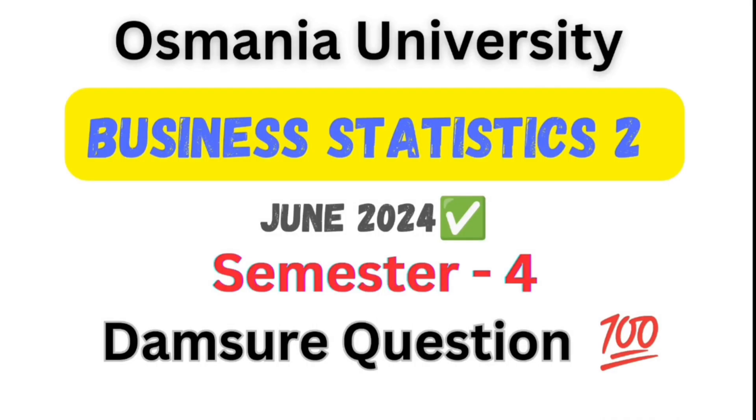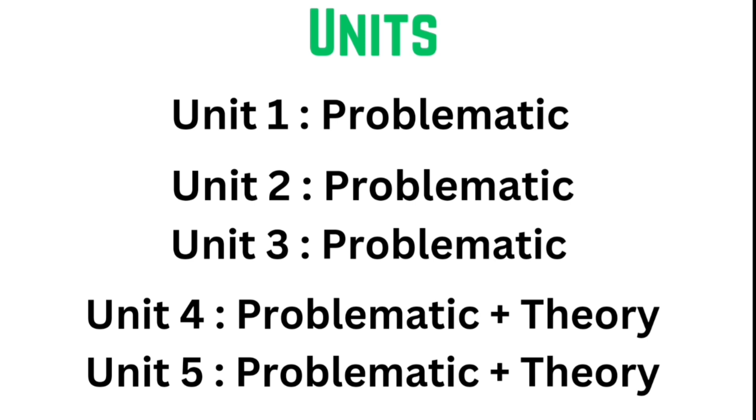Hello guys, welcome back to my channel. We are discussing Business Statistics 2 for Semester 4 Osmania University important questions. These are the five units from 1 to 5. We get problematic as well as theory in units 4 and 5.